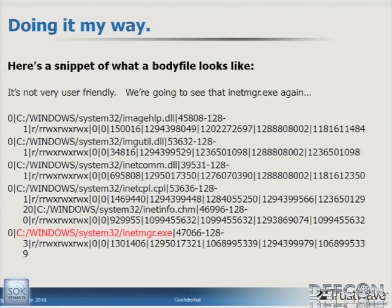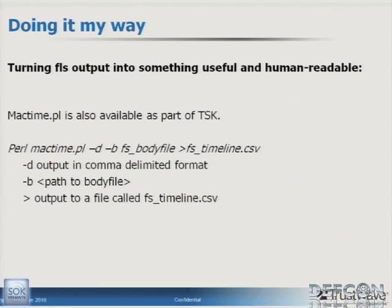Here's what a body file looks like — admittedly ugly, not user-friendly at all. The numbers representing timestamps are seconds from 1969/1970, which you wouldn't want to read directly. But something interesting to note: there's an inetmgr executable highlighted in red that we're going to see again in just a second. To turn FLS output into something useful and human-readable, you use the MacTime Perl script, also available as part of the Sleuth Kit. The command is: perl mactime.pl -d -b, point it at your body file, and output it to a CSV file.